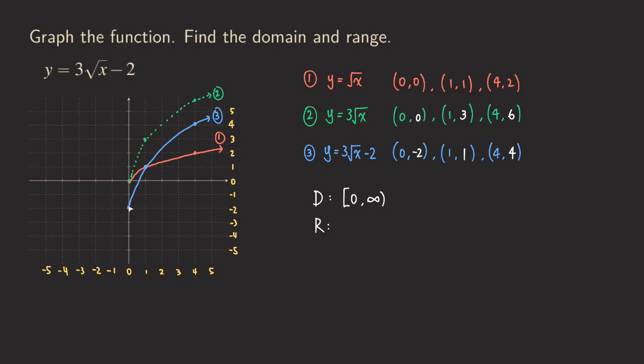You can see that the lowest point for this graph is that it will be negative two. And it's including negative two because if you plug in x zero for the x then you get negative two. So we can include the negative two.